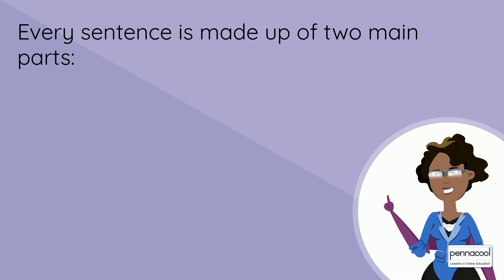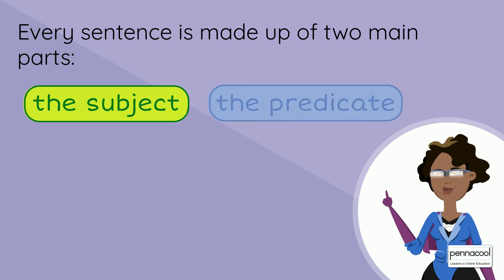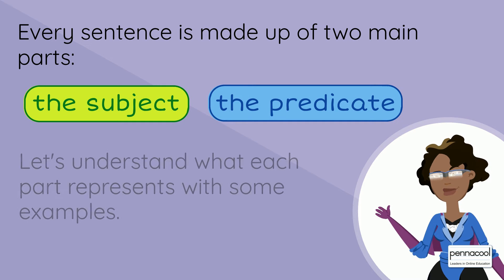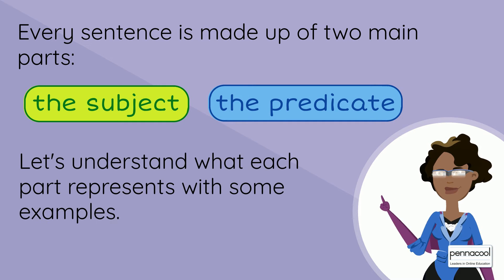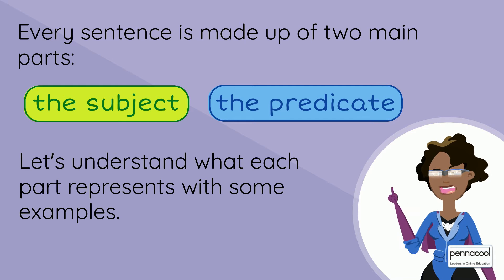Every sentence is made up of two main parts: the subject and the predicate. Let's understand what each part represents with some examples.